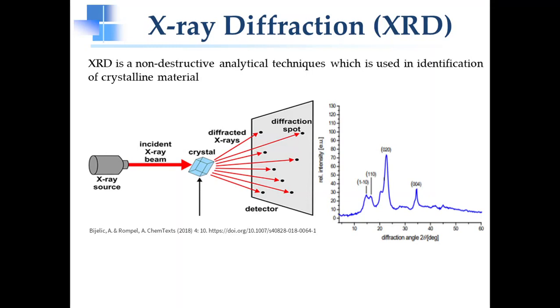The peak observed in the X-ray diffraction spectrum tells about the atomic structure of the sample. Each crystalline material has a different atomic structure, therefore gives different X-ray diffraction.